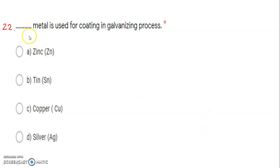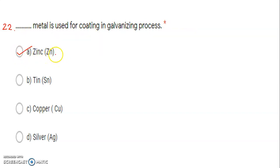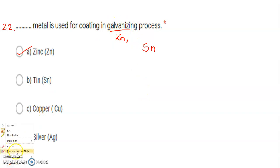Next question: which metal is used for coating in the galvanizing process? This question was repeated in the previous video. The answer is zinc metal, symbol Zn. Remember: for galvanizing, zinc is used, and for tinning, tin is used — symbol Sn. Since galvanizing is asked, the correct answer is zinc.